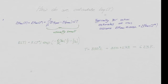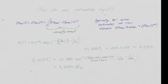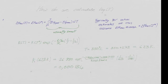Putting all the numbers in, K at 350°C or 623 K is equal to K at 25°C — which we worked out as 26,880 — times the exponent of the ΔH of reaction, which was about minus 91 kilojoules per mole. R is 8.3 joules per mole per K, but since ΔH is in kilojoules we multiply by 1,000 to convert, and it's 1 over 623 K minus 1 over 298 K. This gives us an equilibrium constant of 0.000134.